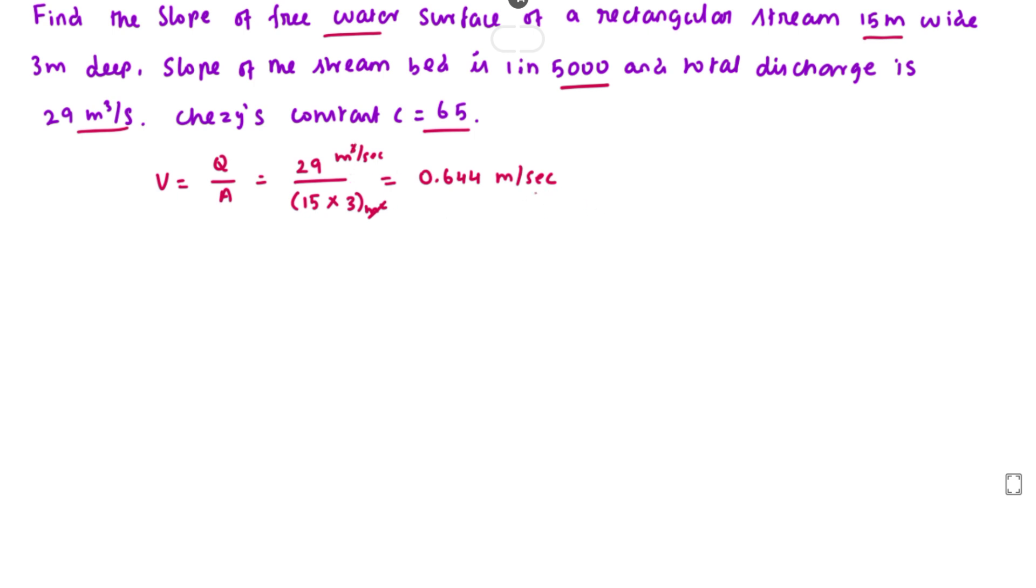Next, we find the area. Area equals length times width, which is 15 times 3 meters, equal to 45 square meters.